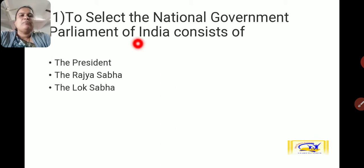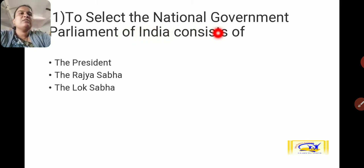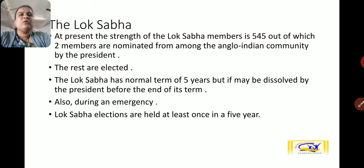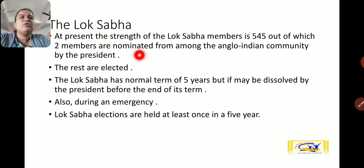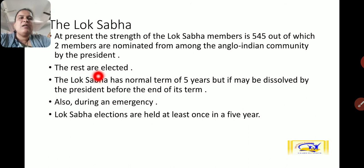What are the functions of parliament? Parliament of India consists of the President, Rajya Sabha, and Lok Sabha. One very important function is to select the national government. The Lok Sabha selects the government. At present, the strength of Lok Sabha members is 545, out of which two members are nominated from among the Anglo-Indian community by the President, and 543 members are elected by the people.